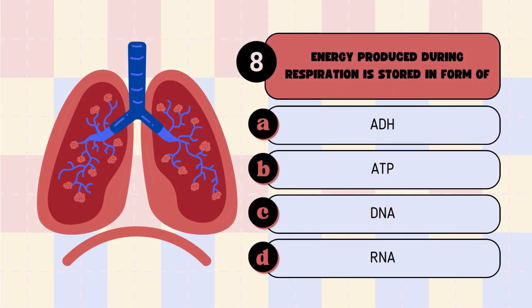Question 8: Energy produced during respiration is stored in the form of — A. ADHD, B. ATP, C. DNA, D. RNA. Pick your answer.